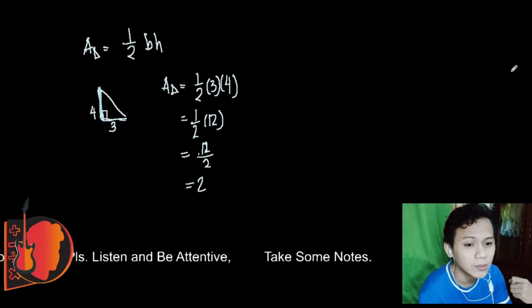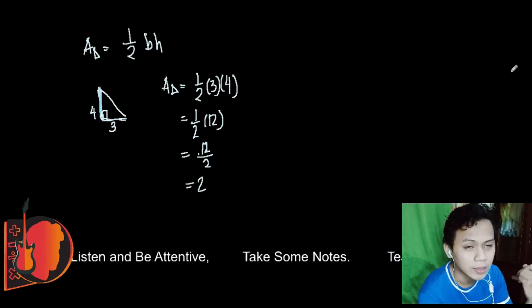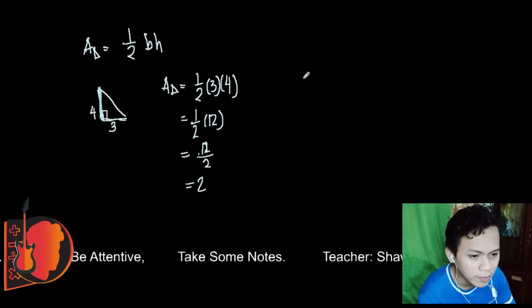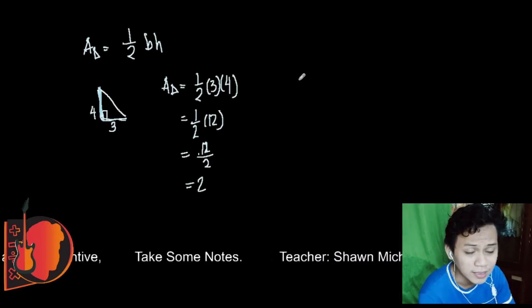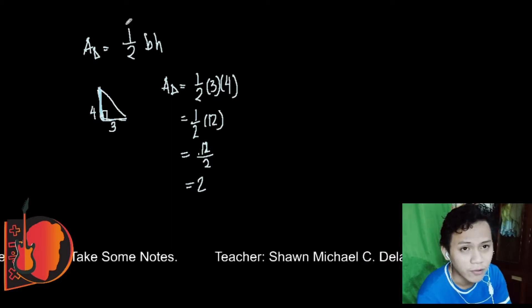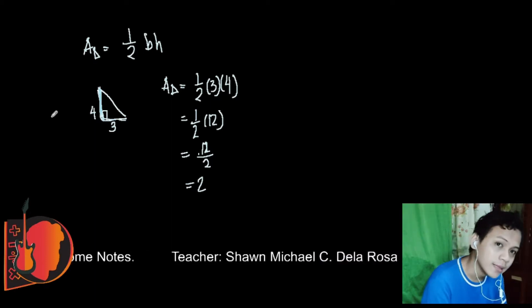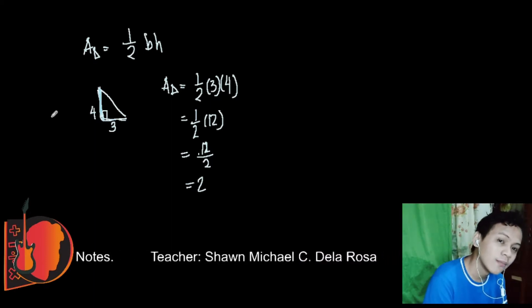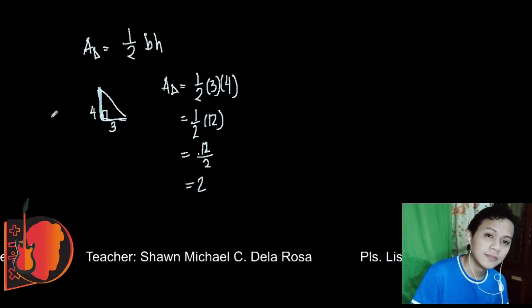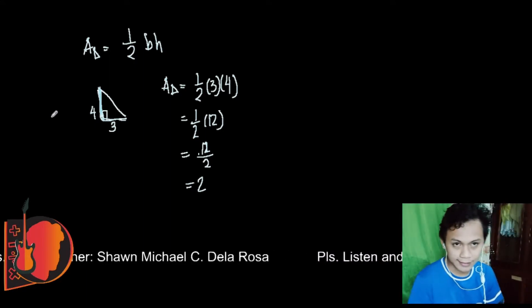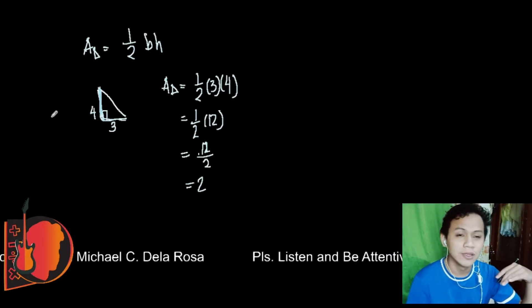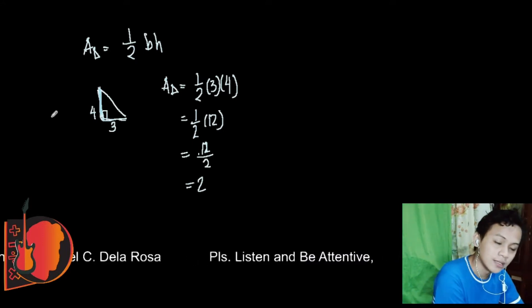That's how you get the area of a right triangle. Now, how about an isosceles triangle? We can still use this formula, but we need to understand that we need the height, not just the side measurement.